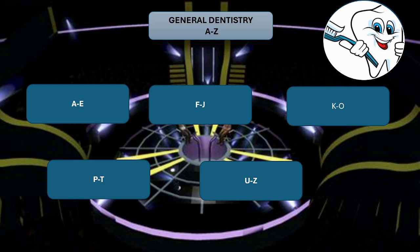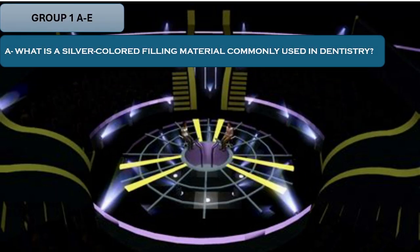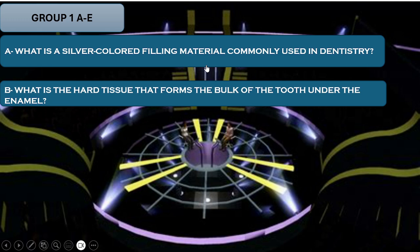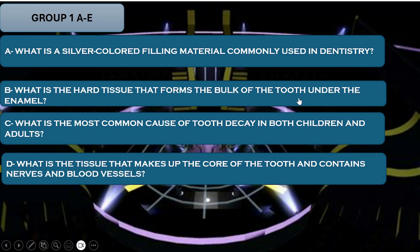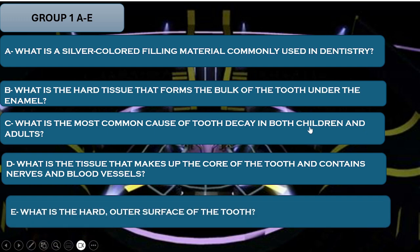So what are we waiting for? Grab your notebooks, stay sharp, and let's begin our quiz. The first group has questions starting from A to E. What A is a silver-colored filling material commonly used in dentistry? What B is the hard tissue that forms the bulk of the tooth under the enamel? What C is the most common cause of tooth decay in both children and adults? What D is the tissue that makes up the core of the tooth and contains nerve and blood vessels? And the final question of this group — what E is the hardest surface of the tooth?